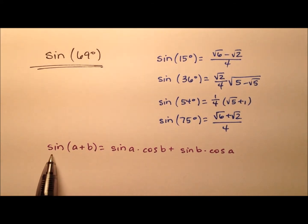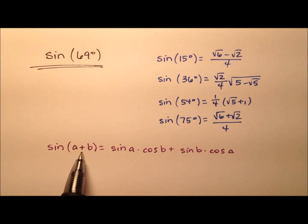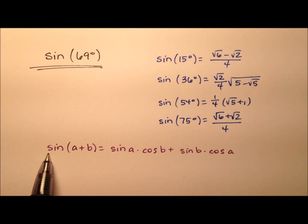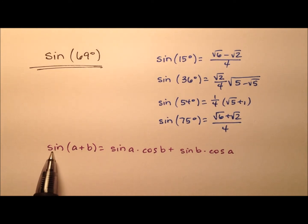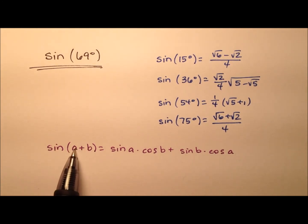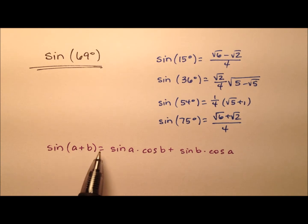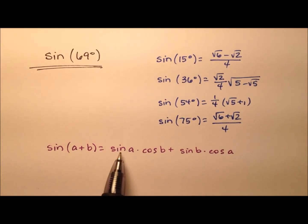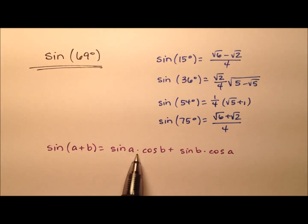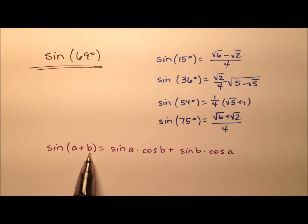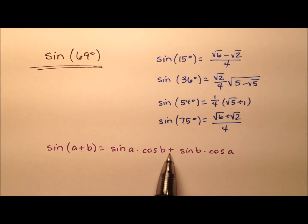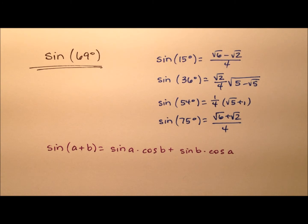We're going to do so by using the sum identity for sine, which says the sine of two angles a and b added together has this expansion: it's the sine of a — the first angle — times the cosine of b, which is the second angle, plus the sine of b times the cosine of a.